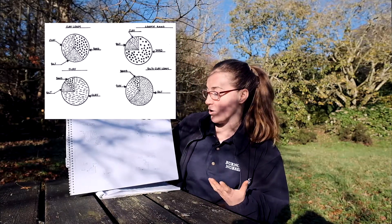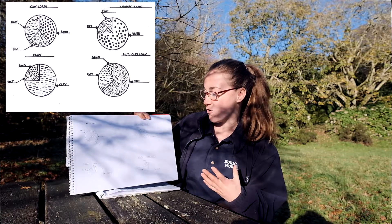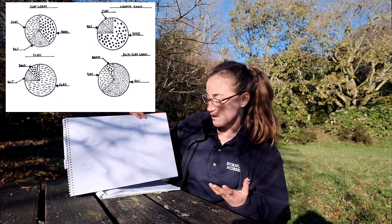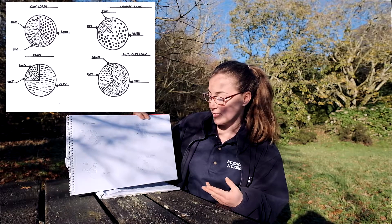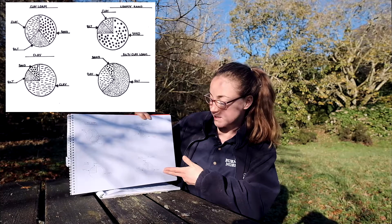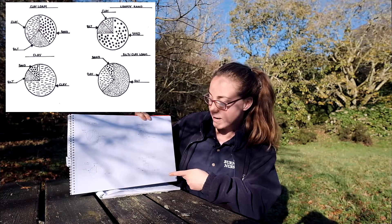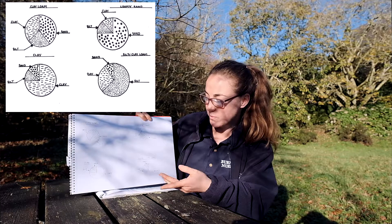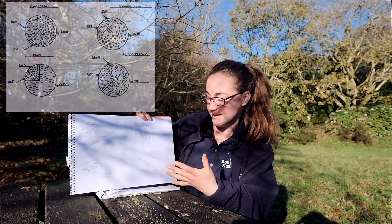You've got loamy sand, which is a composition that has the majority of sand with a small amount of clay and silt. There's a soil type called a silty clay loam which has the majority of silt, a small amount of sand, and some clay — and then a typical clay soil which is three quarters clay with a mixture of sand and silt.